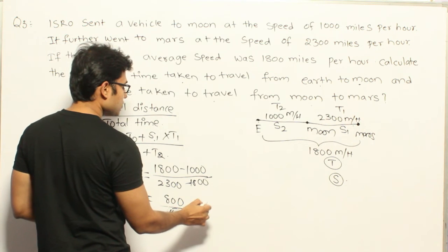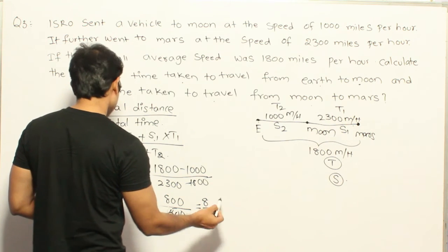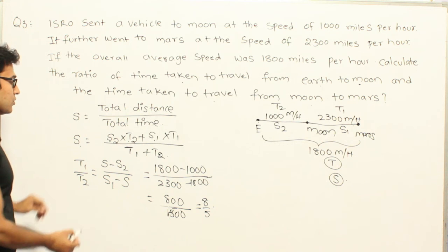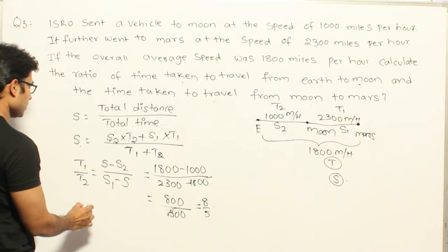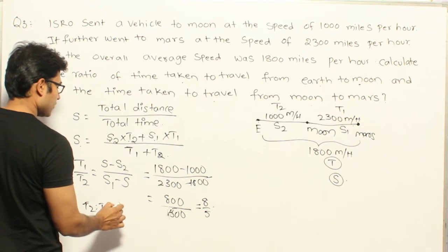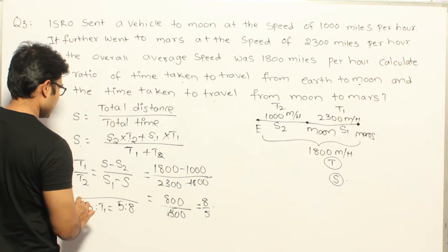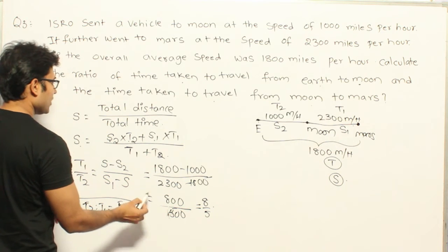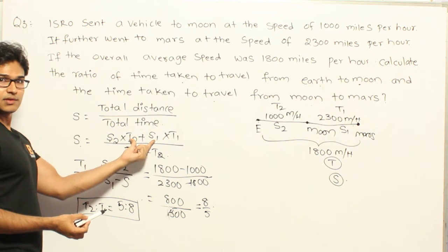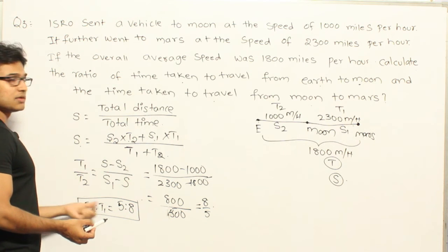So T1 to T2 is 8 to 5. Since they asked for T2 to T1, we flip it: T2 to T1 equals 5 to 8. This is the answer. From the average speed formula, you can cross-multiply and get this result.